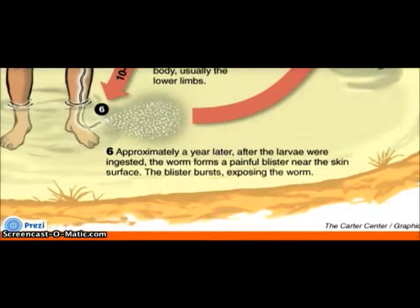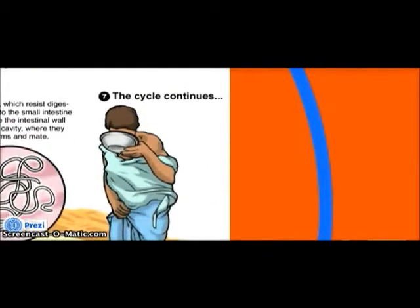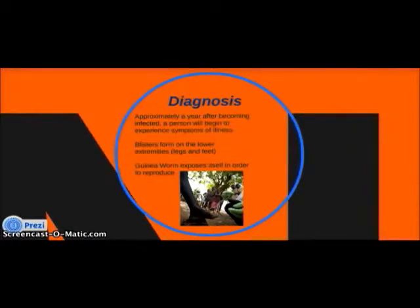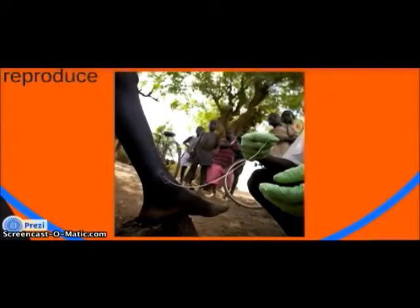The worm then releases its larvae into the water, which get eaten by water fleas, which are then ingested by another person, and the cycle continues. Approximately a year after becoming infected, a person begins to experience symptoms — blisters form on the lower extremities. Here you see a medical professional pulling the guinea worm out of a blister on a patient's ankle.